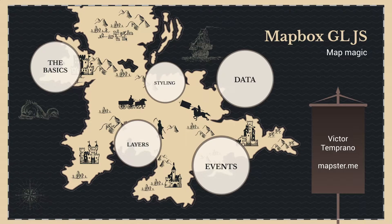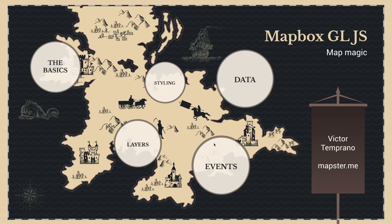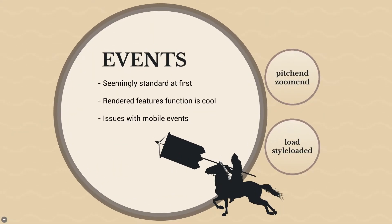Now we'll talk about how you can actually detect different events. I'm assuming you have some JavaScript knowledge, so you're probably already aware of typical browser events like click, mousedown, and hover. It's worth going over some of Mapbox's idiosyncrasies and how you can attach events to different elements within Mapbox. Let's take a look at the screenshot here.